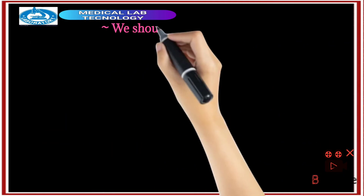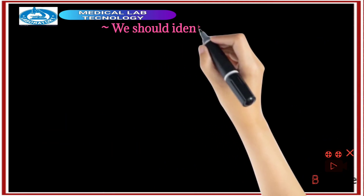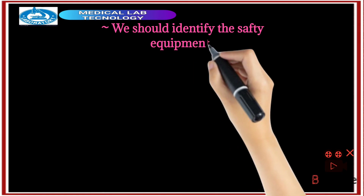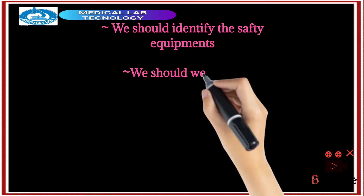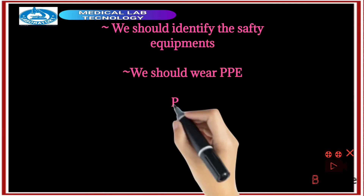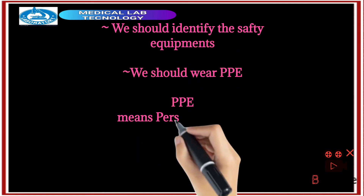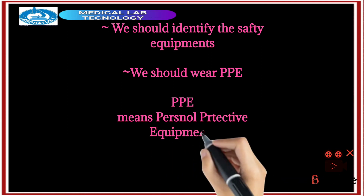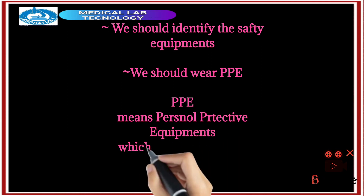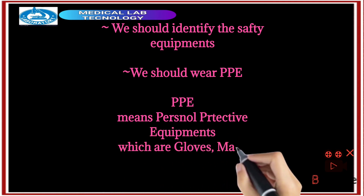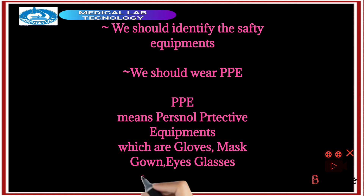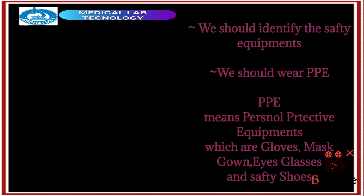We should identify the safety equipment. We should wear PPE. PPE means personal protective equipment, which includes gloves, mask, gown, eyeglasses, and safety shoes.